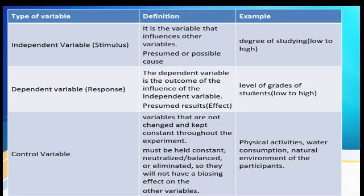Number 1: independent variable, or stimulus. It is the variable that influences other variables. It is the presumed or possible cause. Example: degree of studying, from low to high.